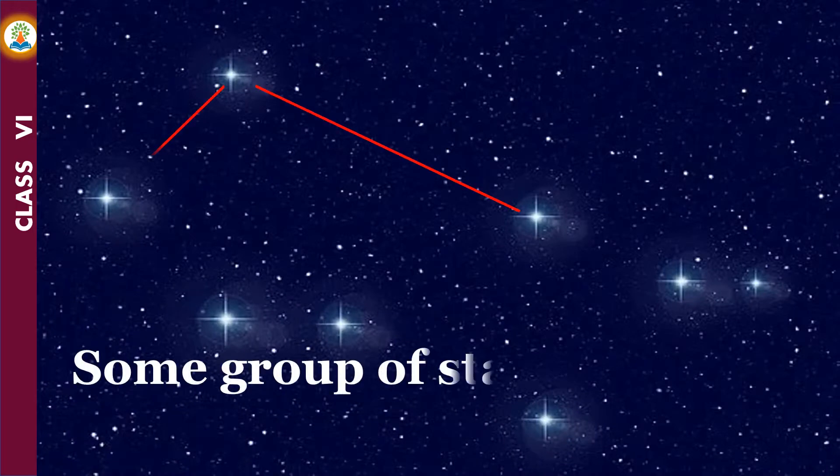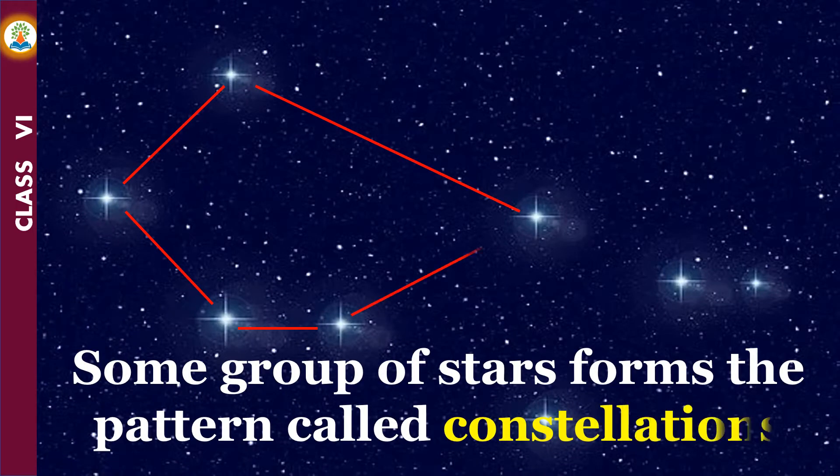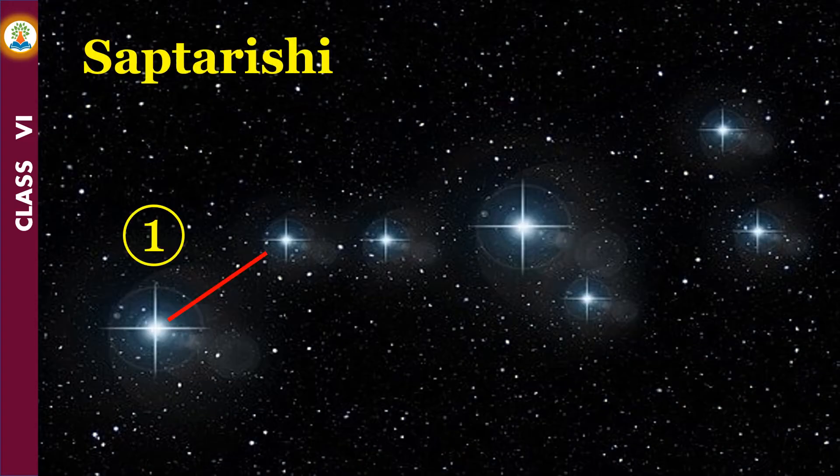Some groups of stars form patterns called constellations. One of the most easily recognizable constellations is the Saptarishi.